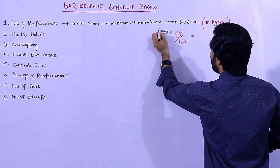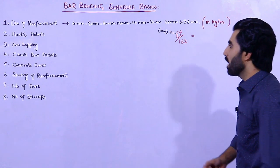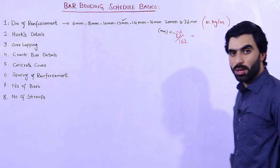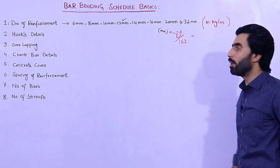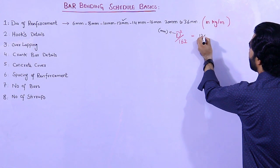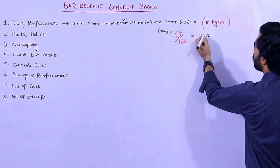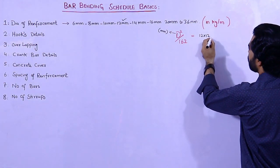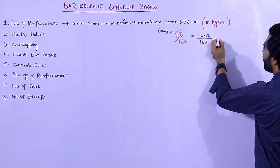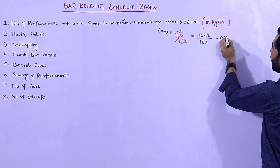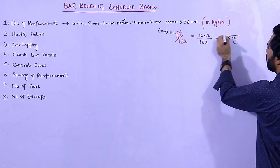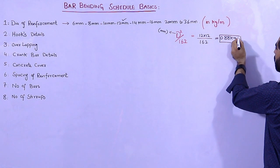The D should be in millimeters. Suppose I am finding out the weight of steel for 12mm, which is normally used for building construction. So for D squared you write 12 multiplied by 12, then divide by 162, and you will get the value 0.88 kg per meter. So this is the weight of steel in kg per meter.